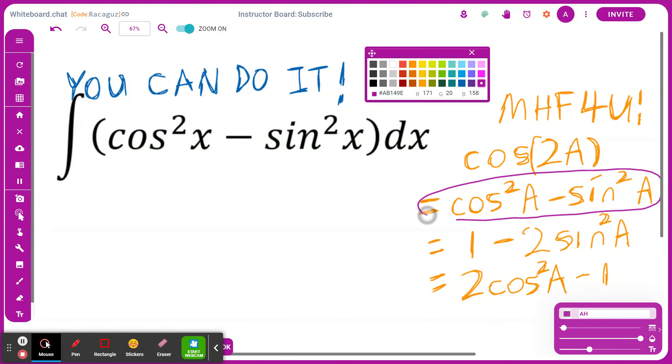Now I'm going to switch colors here so you can see the connection. This is the same as cosine of 2A. This means I can express the entire example as the integration of cosine of 2x. In this case, this is going to be cosine of 2x.